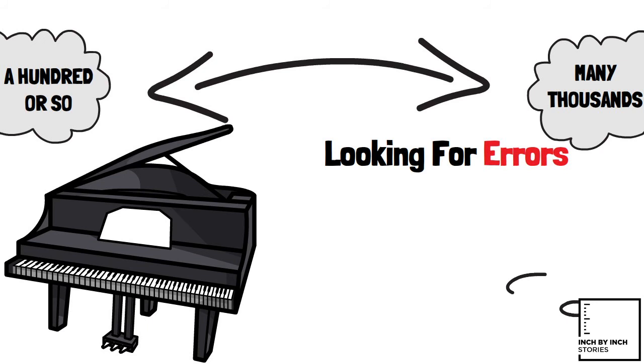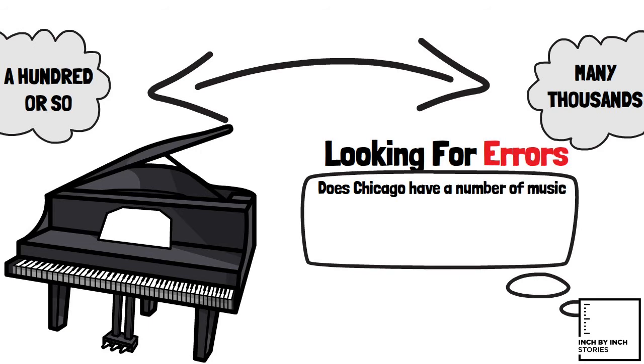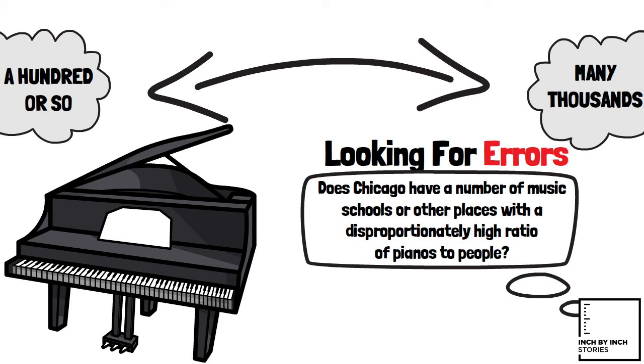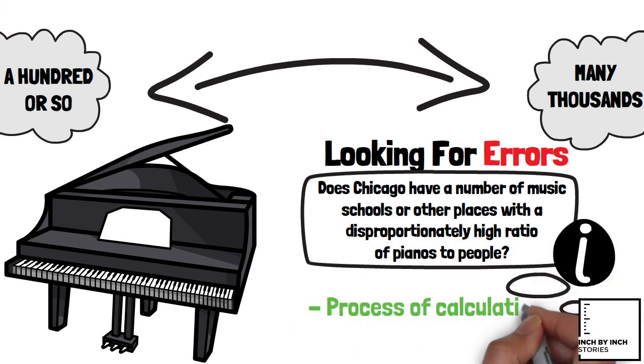First, looking for errors. Then, for factors that the estimation didn't take into account, like does Chicago have a number of music schools or other places with a disproportionately high ratio of pianos to people? Whether close or very far from the observed results, the context of what the estimation provides gives useful information both about the process of calculation and the assumptions that have been used to look at the problems.